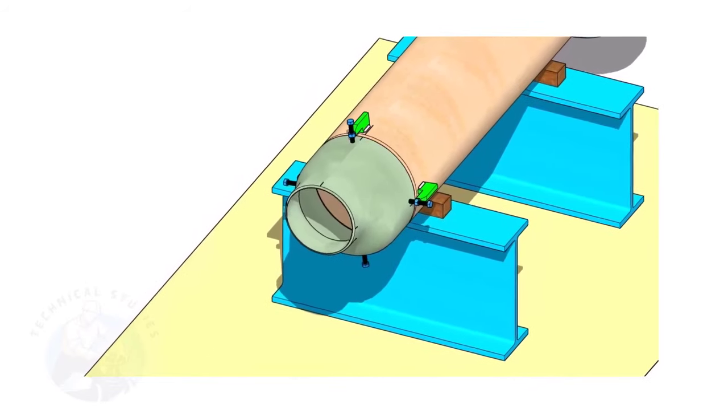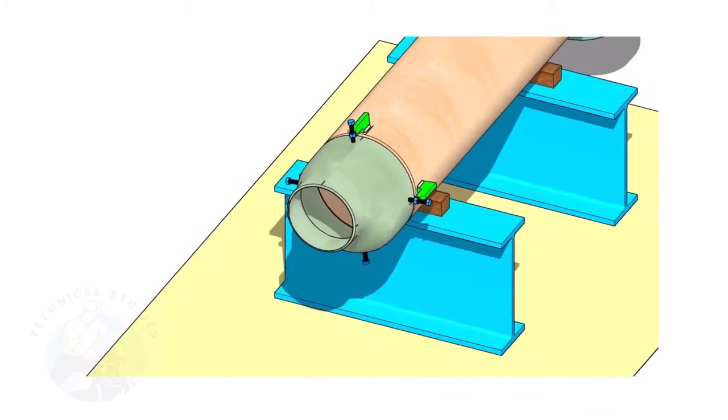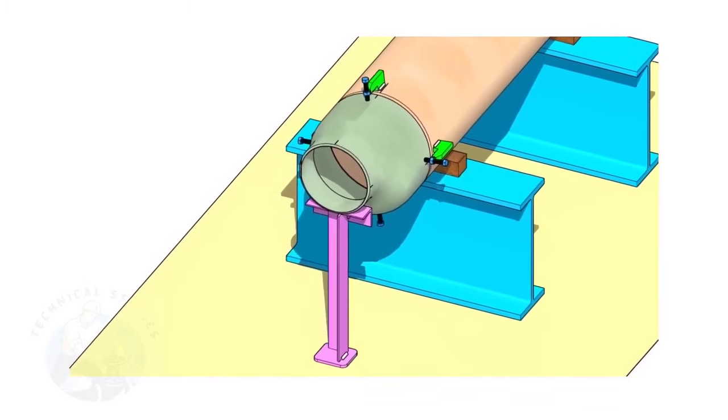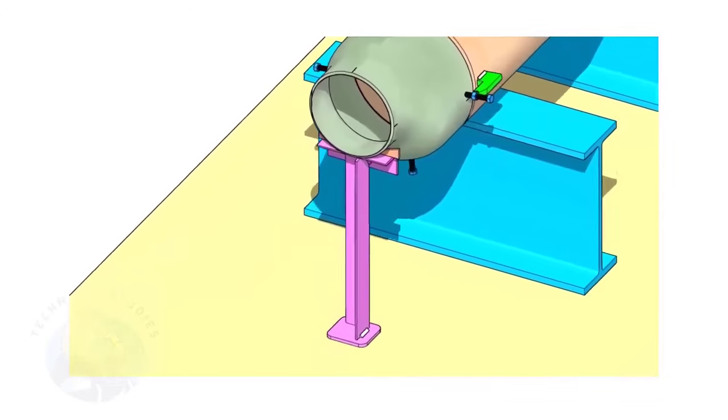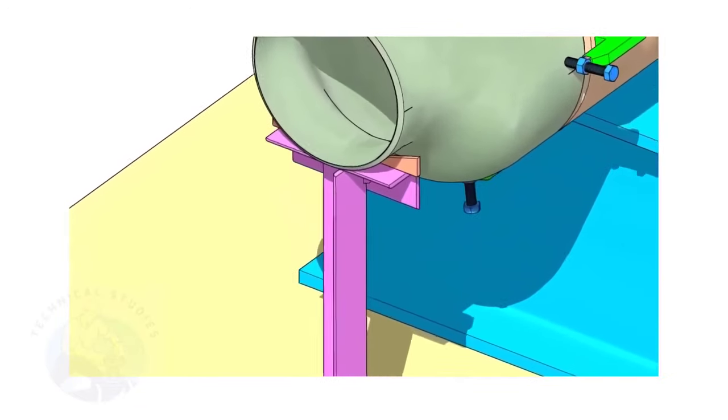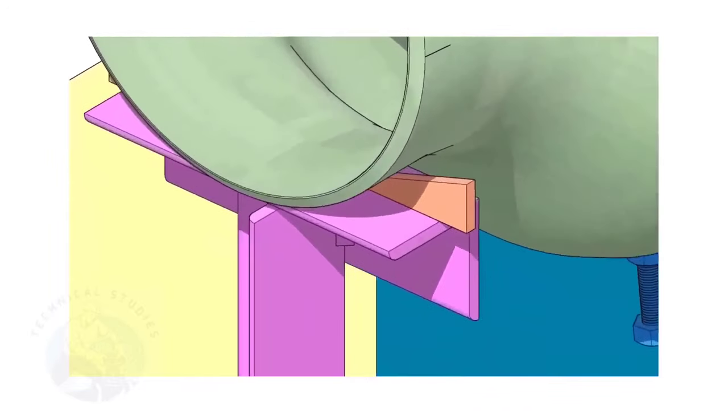Put the reducer in the clamps. Slightly tighten the bolts. Arrange proper supports below the reducer. The height of the support shall be adjustable. Here, I used simple wedges.